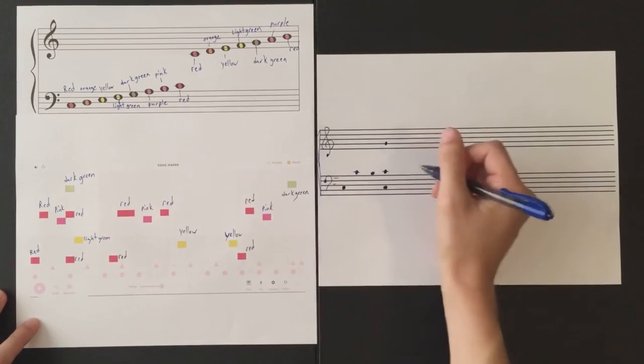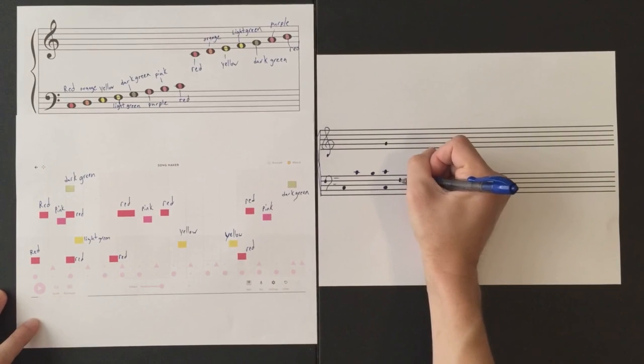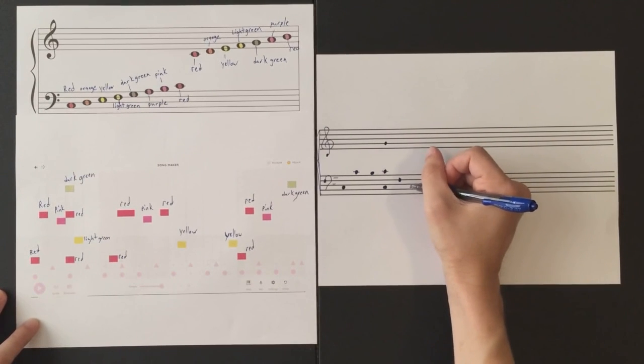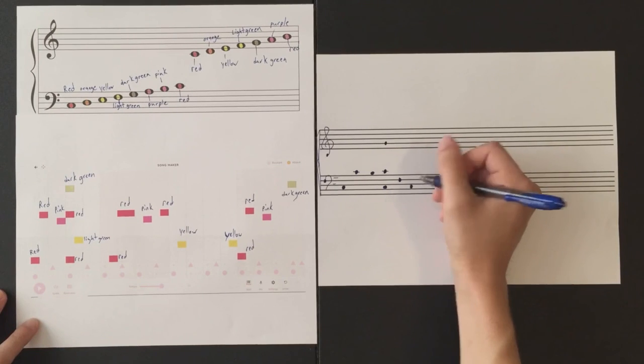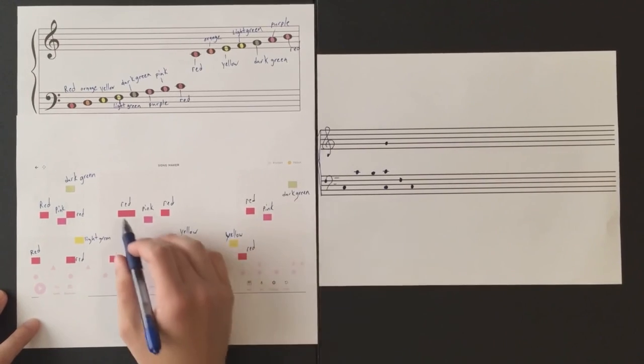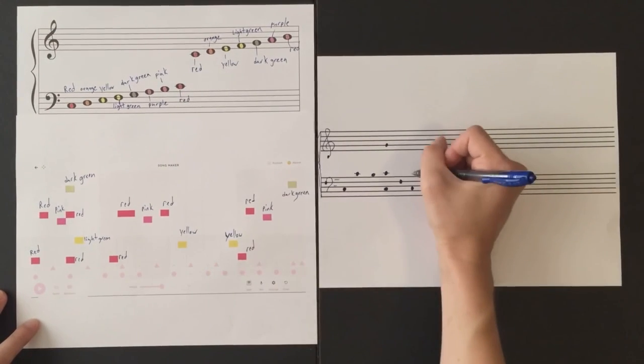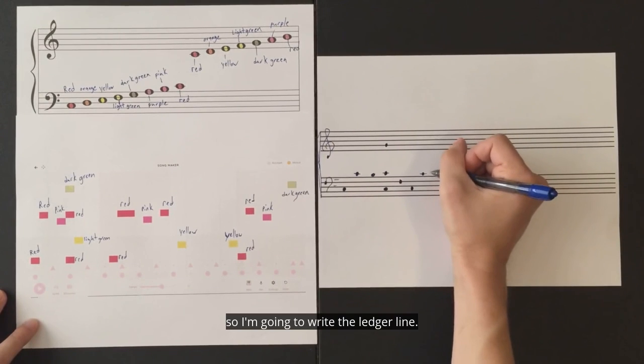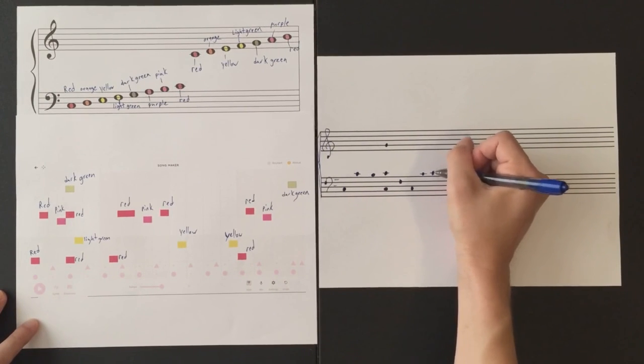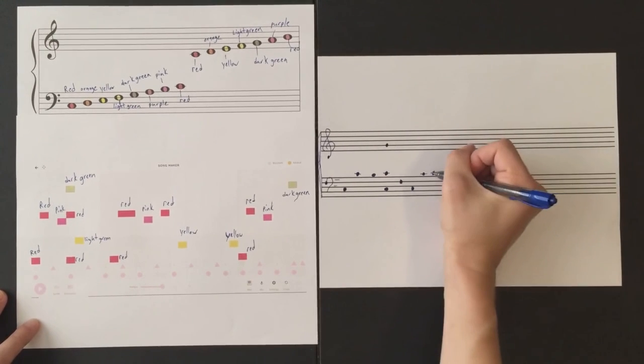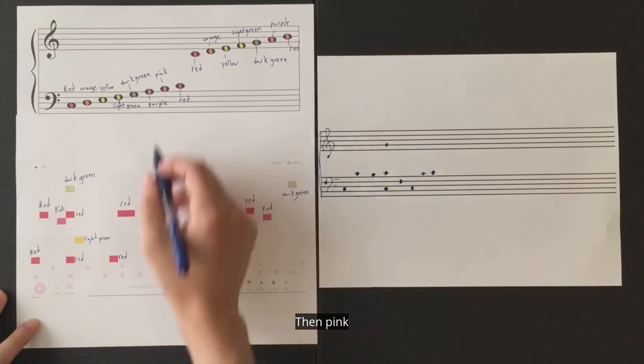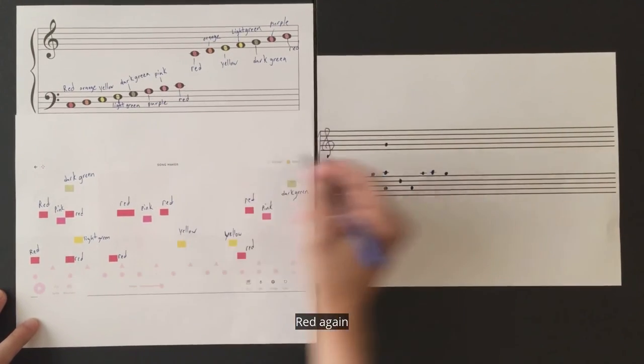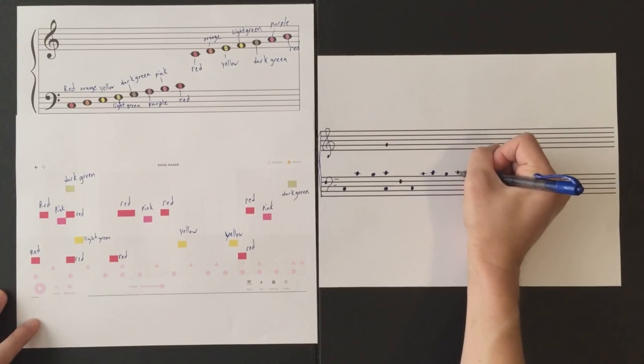And then dark green, or excuse me, light green. And then lower red. And then two of the higher red, which could be treble clef or bass clef. So I'm going to write the ledger line. Then pink in the bass clef. Red again with our ledger line.